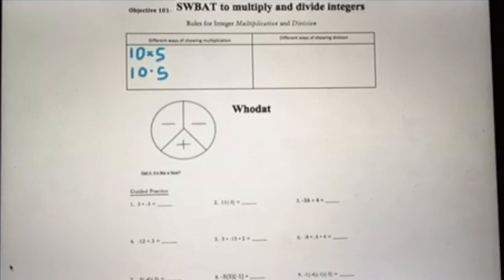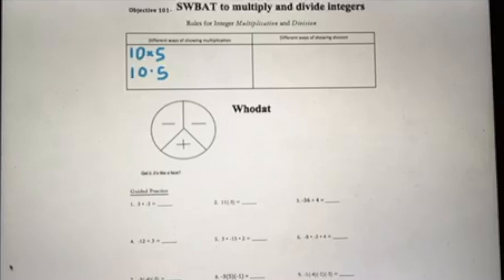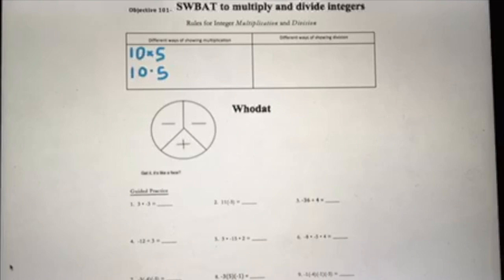The reason we'll use that a lot more frequently in Algebra 1 is because we use x as a variable very often, and that can be confusing if we have x times something. So we try to usually avoid using that times symbol like you did in your middle school days.